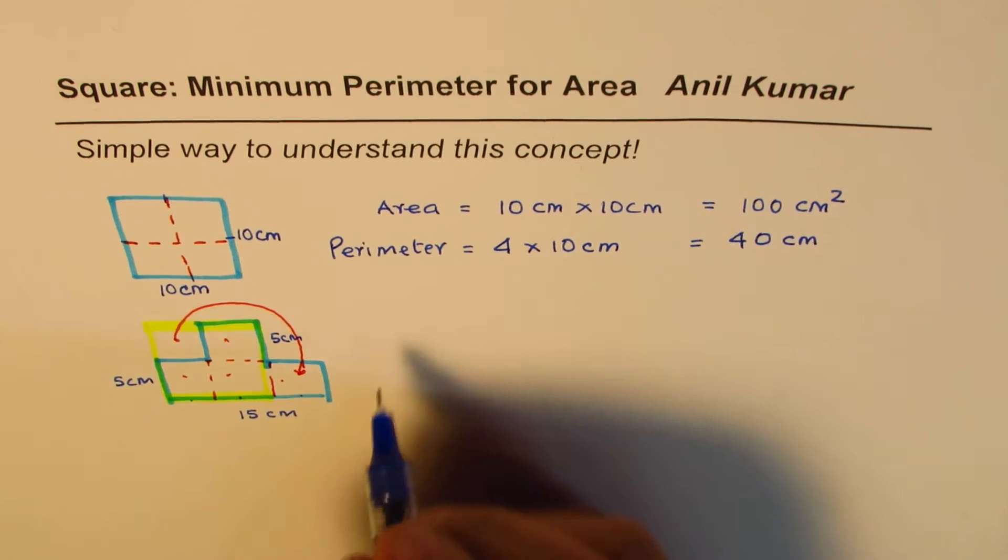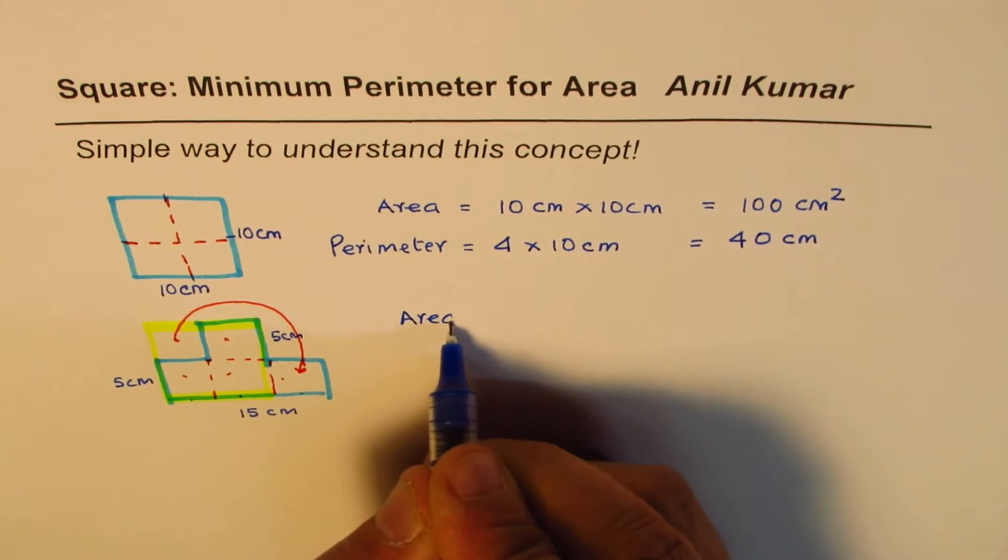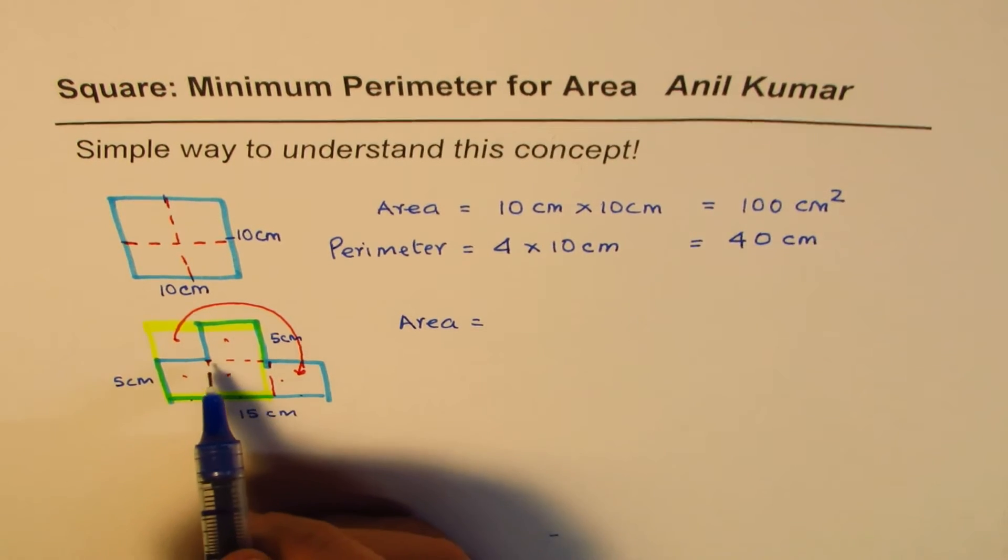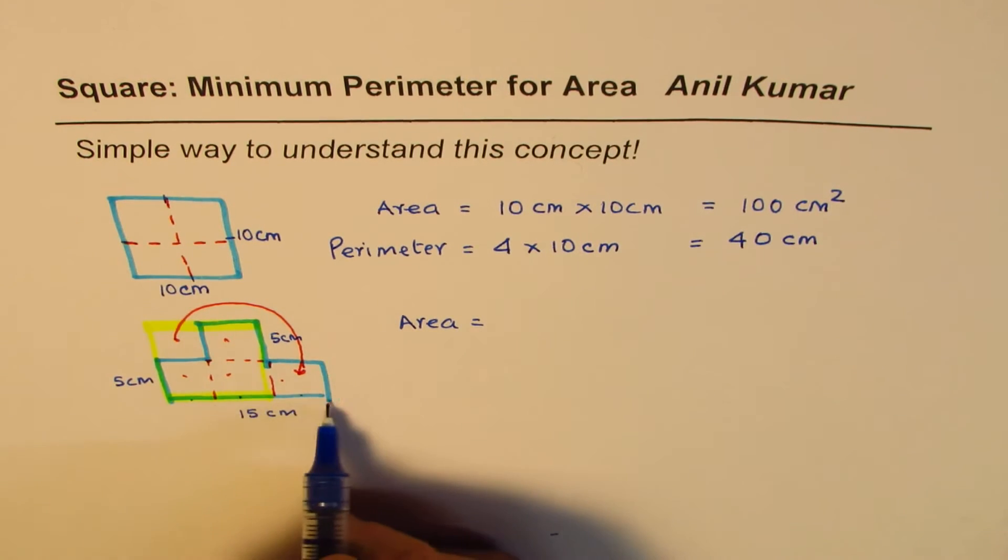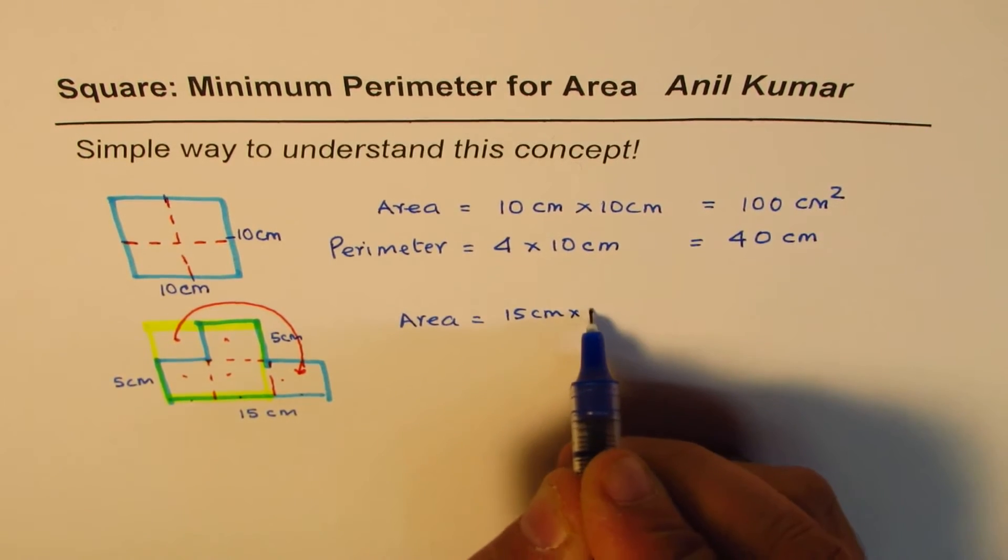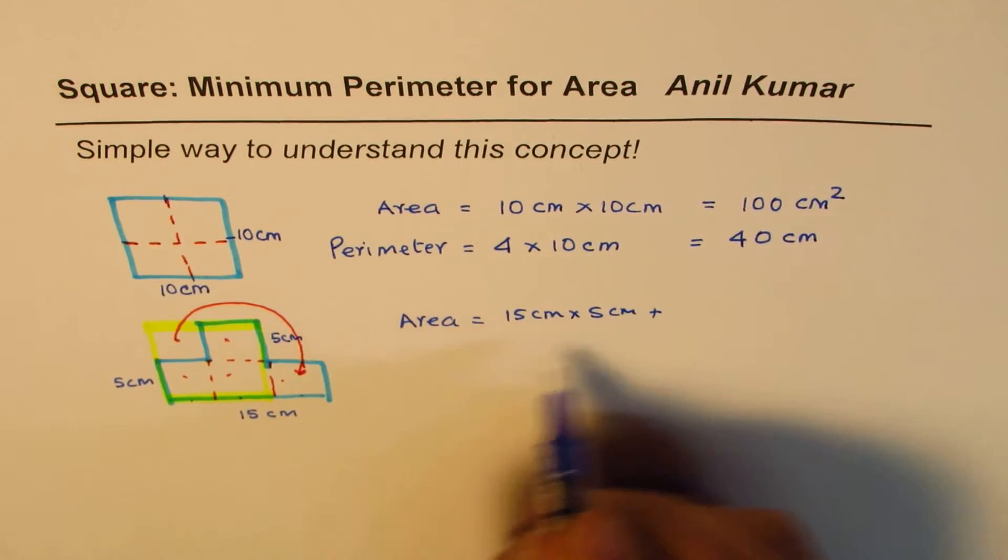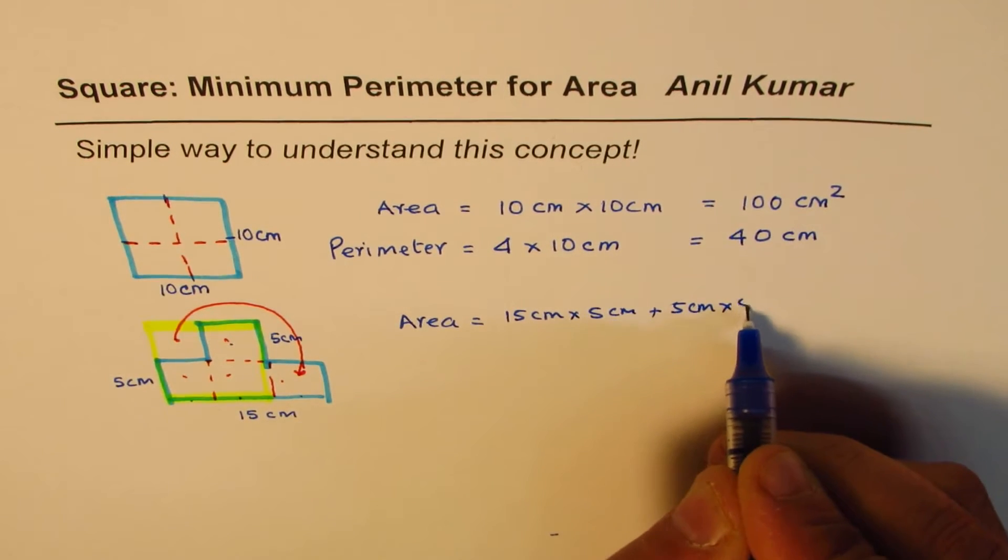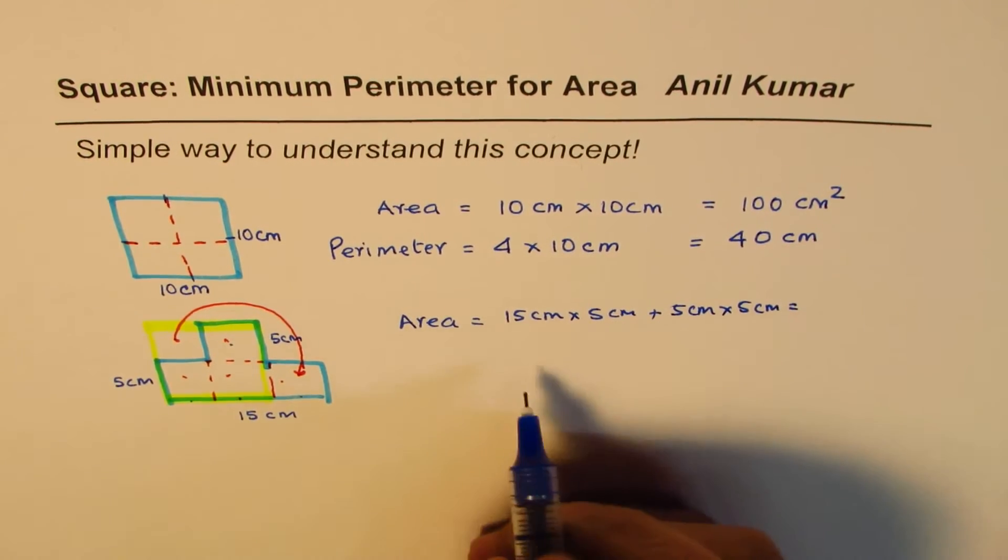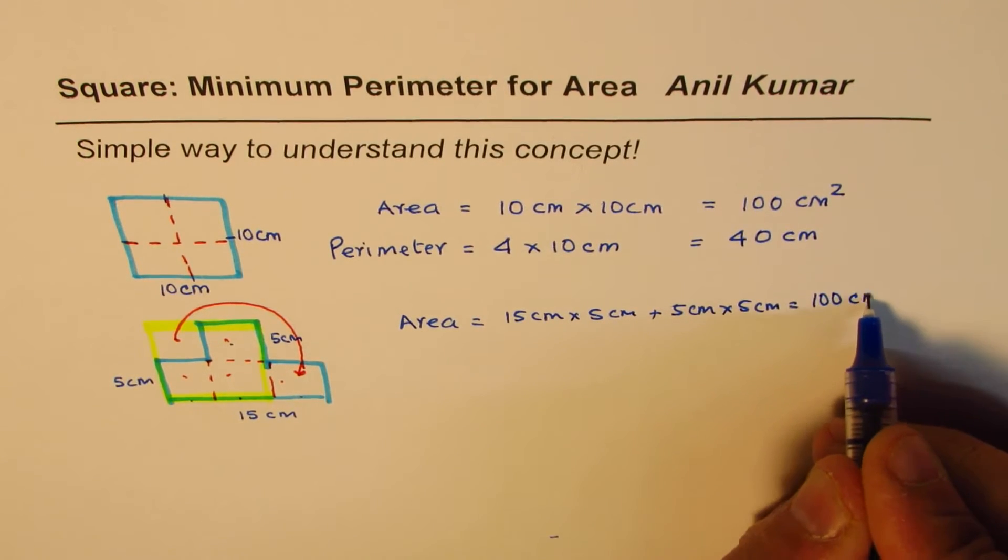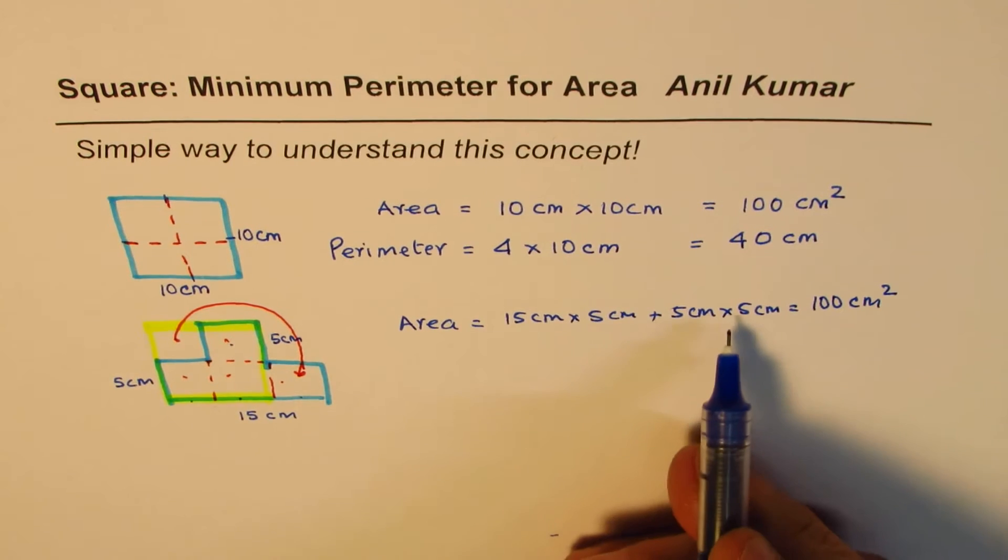Now in this particular, what is the area? Area is still same or you could do this: you could do fifteen times five, fifteen centimeters times five centimeters, plus this area which is five centimeter by five centimeter. And if you add this up you will again get hundred centimeters square. But this is 25, that is 75. 75 plus 25 is hundred.